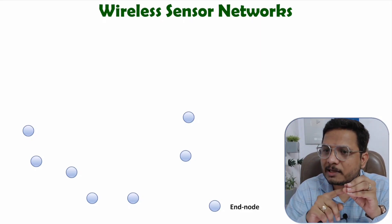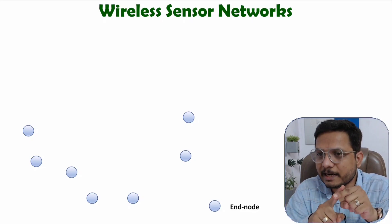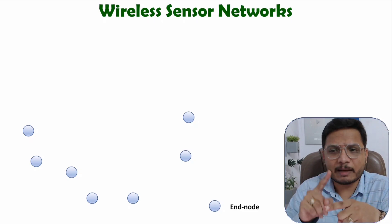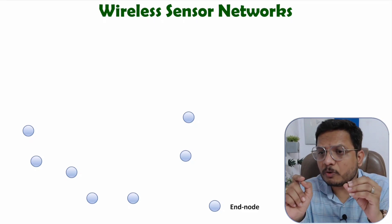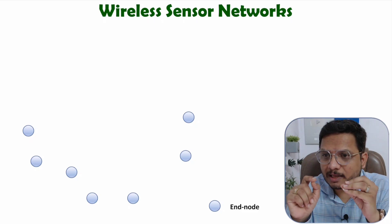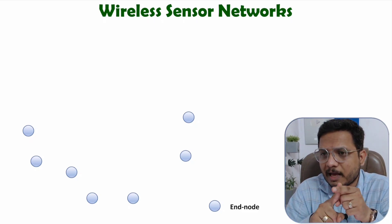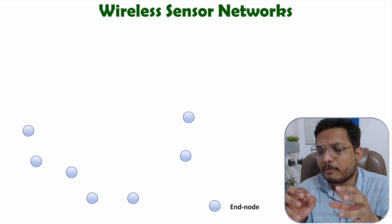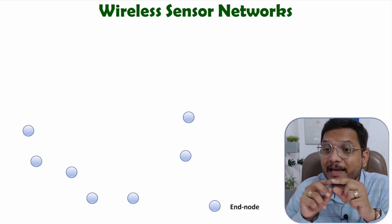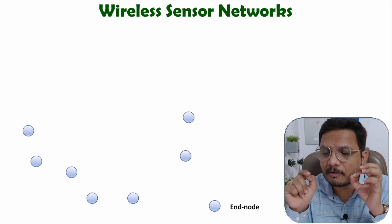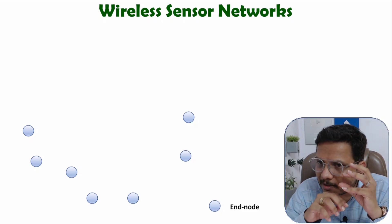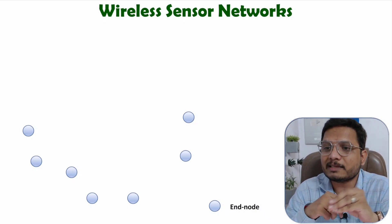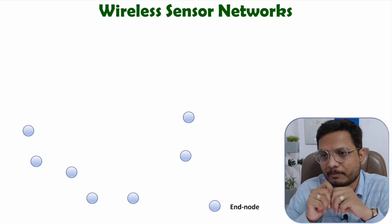Obviously, you will be using sensors to capture physical data. Like if you want to capture temperature, you will be using a temperature sensor. If you want to measure moisture of soil, then you will be using a moisture sensor. If you want to detect gas, then you will be using a gas sensor. Likewise, you will be using sensors in end nodes which will be measuring physical data. Once the sensor is sensing that physical data, that data should be transmitted to a central system.